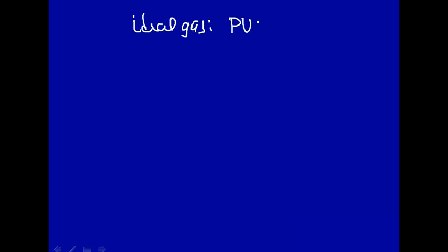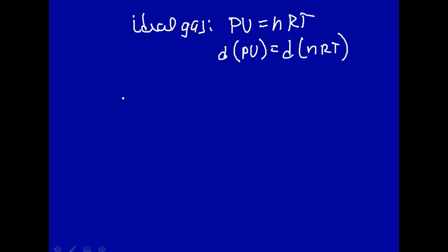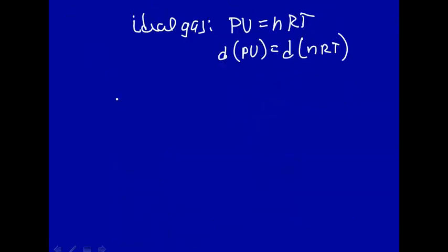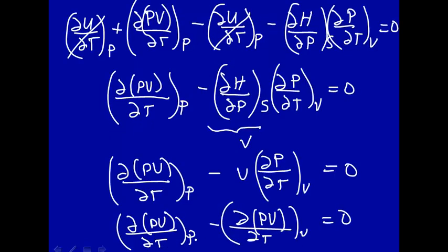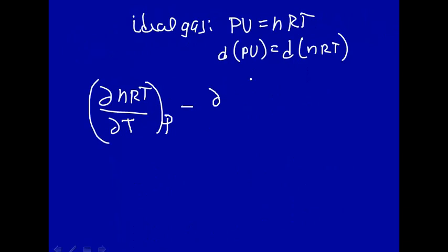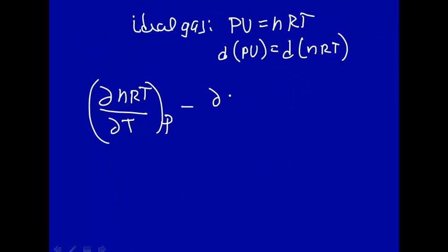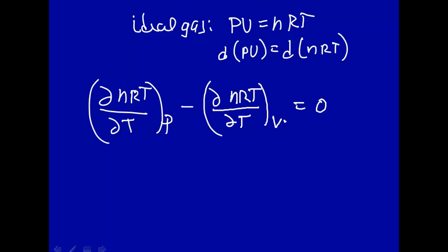For an ideal gas, PV equals NRT, so d(PV) equals d(NRT). We substitute NRT for PV throughout. This gives us how NRT changes with T at constant pressure, minus how NRT changes with T at constant volume, equals zero. N and R are constants, and the derivative of T with respect to T is just one — and it doesn't matter whether it's at constant pressure or constant volume.